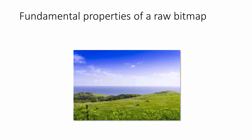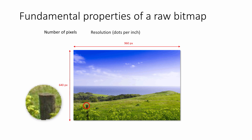There are three fundamental properties of a bitmap image. The number of pixels, which can be calculated by multiplying the width in pixels by the height in pixels. The resolution, which depends on the size of the pixels — the smaller the pixels, the greater the density of pixels, so the higher the resolution and the better the quality of the image. Resolution is measured in dots per inch. The colour depth is the number of bits used to encode the colour of each pixel.